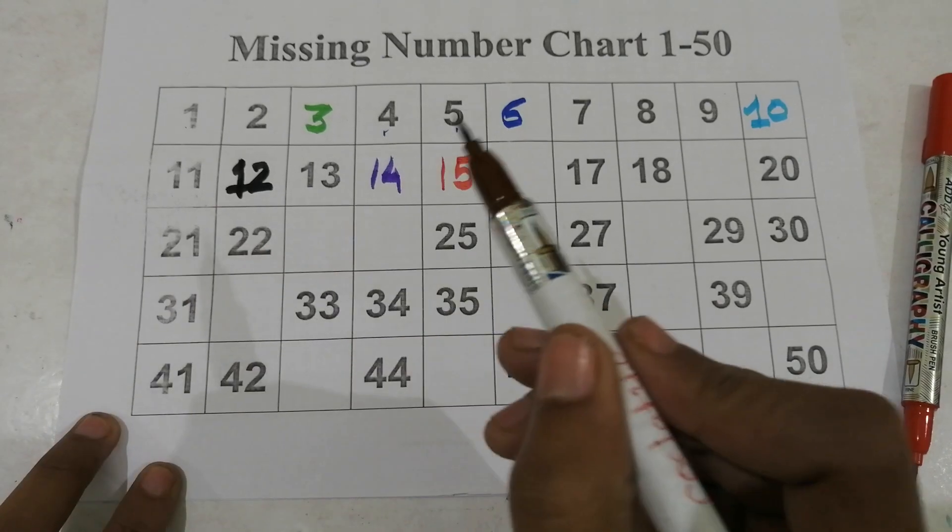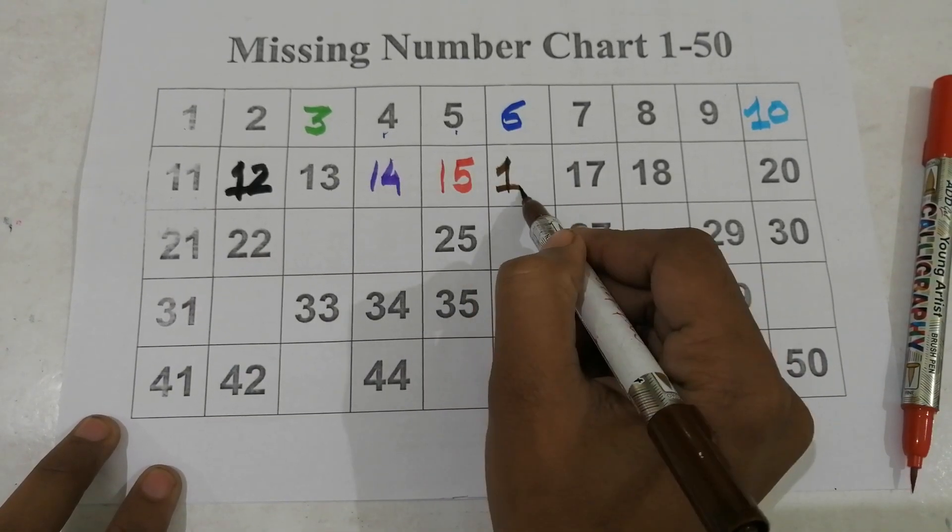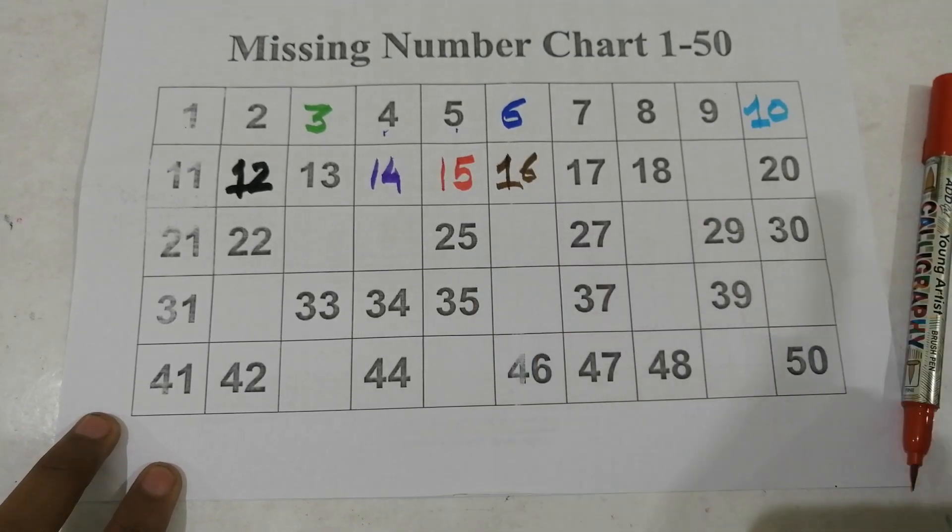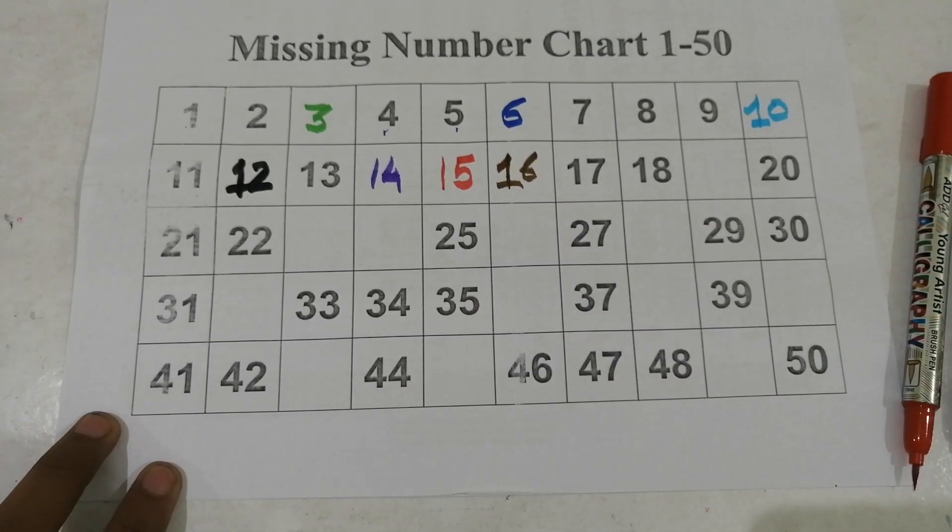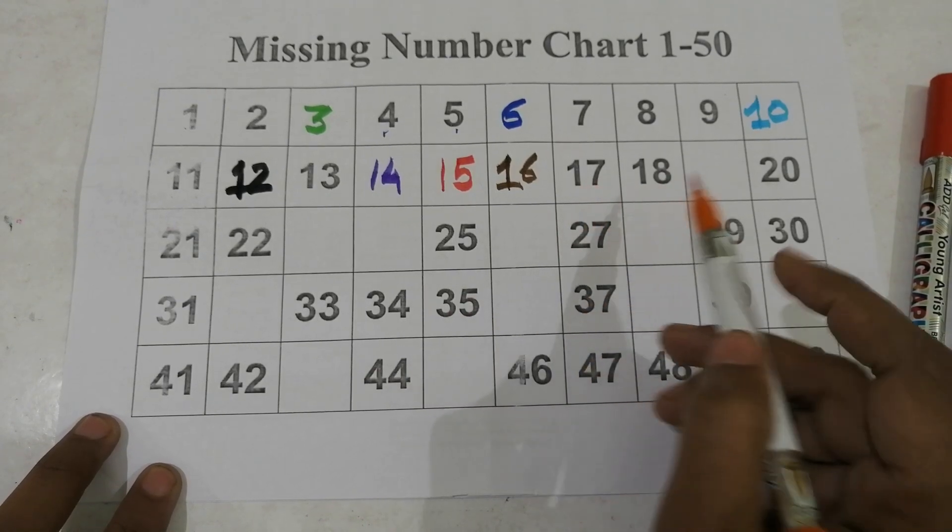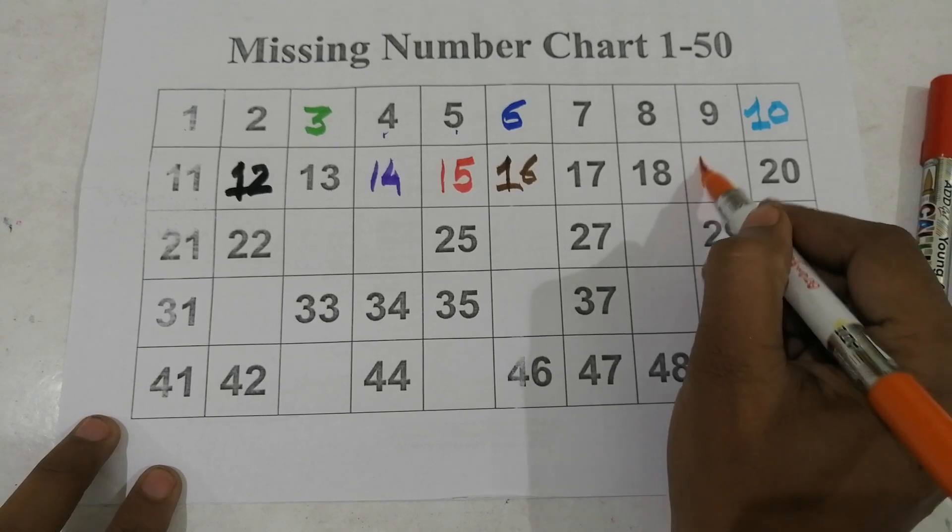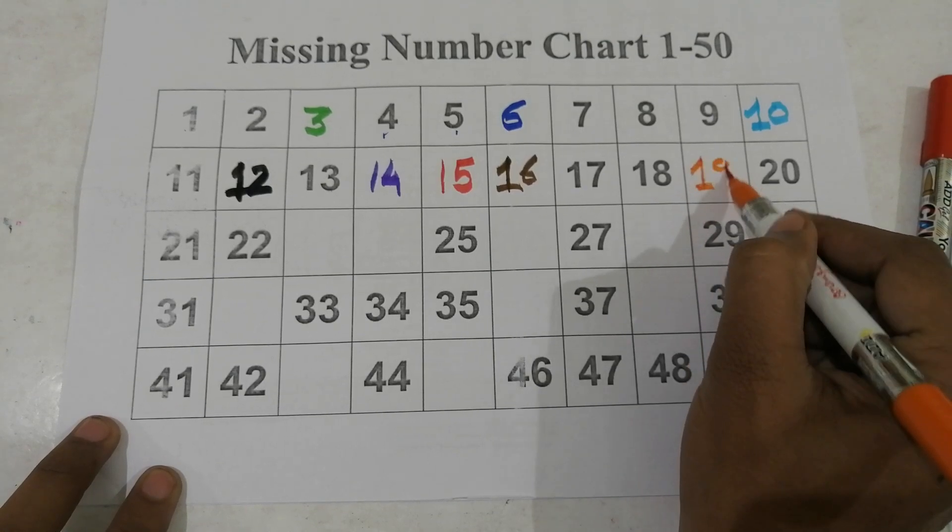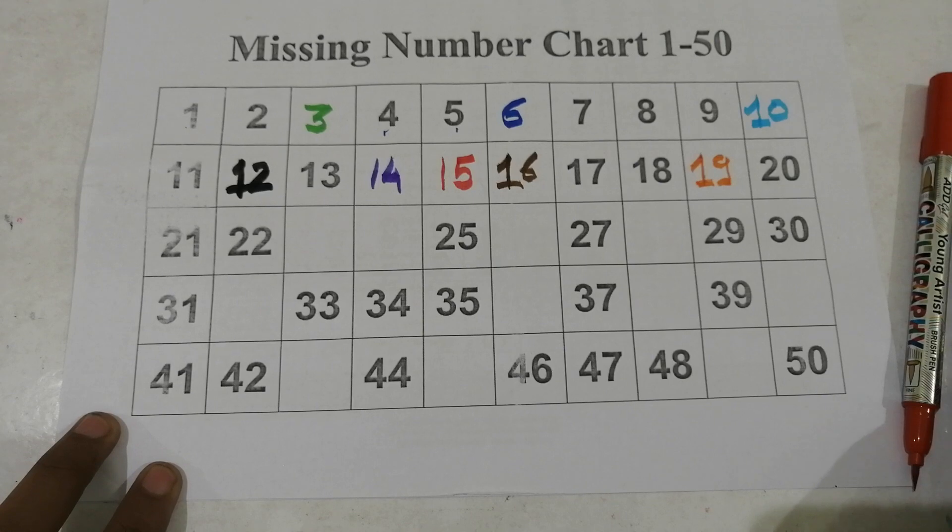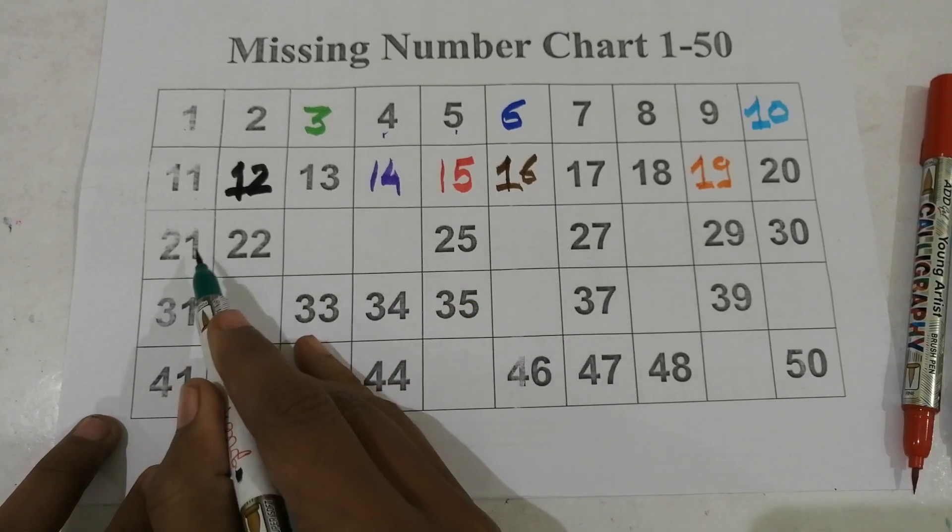Chocolate color 16, 1, 16. 17, 18, missing number orange color 19.